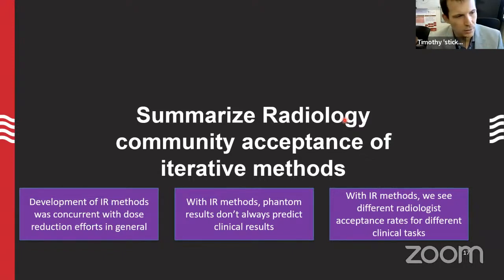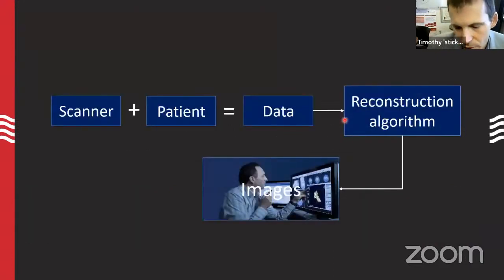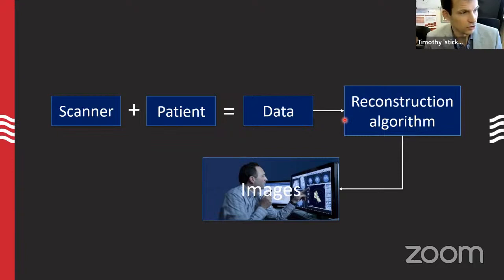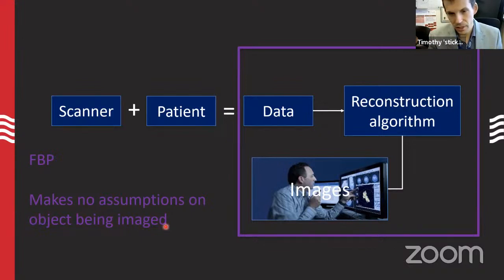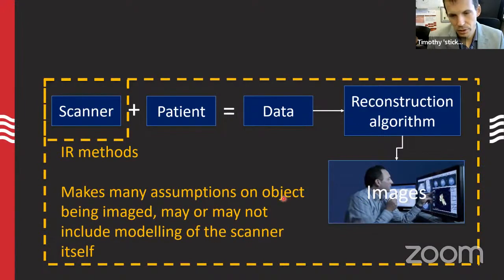Let's step back and talk about CT reconstruction in general. At a high level: we have the CT scanner hardware, we add a patient, get some data, do some reconstruction like filtered back projection, and get an image for the radiologist. In this workflow we're not making a ton of assumptions about what's being imaged — I could put a dinosaur bone, a tree trunk, or a human head in that scanner and the reconstruction algorithm would treat it the same.